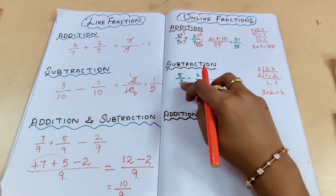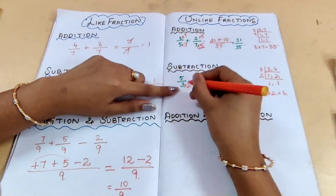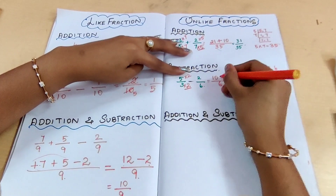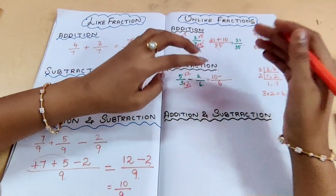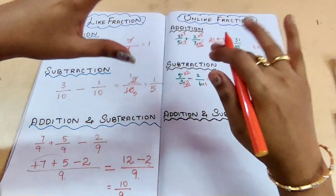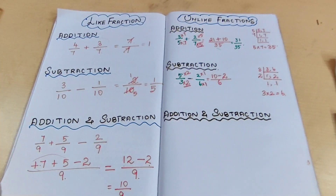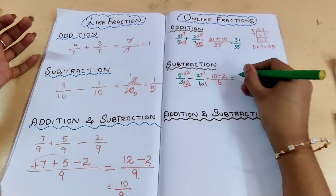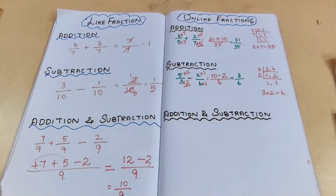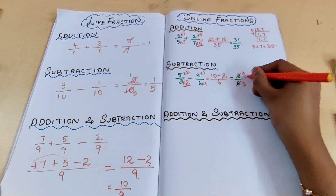Compare each denominator with the LCM. The first fraction's denominator is 3; 3 into 2 is 6, so multiply numerator and denominator by 2: 5 times 2 is 10. Put the minus symbol. For the second fraction, 6 into 1 is 6, so multiply by 1: 2 times 1 is 2. Now perform subtraction: 10 minus 2 is 8, giving 8 by 6. Convert to simplest form: both are multiples of 2, so 4 by 3 is the final answer.